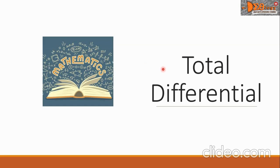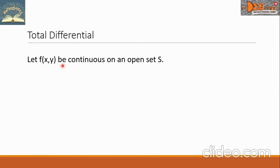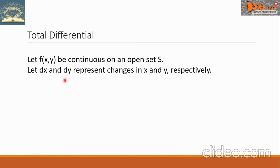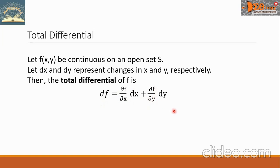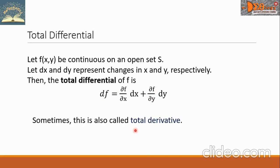Today we're going to study total differential. Let f of x, y be continuous on an open set S. Let dx and dy represent changes in x and y respectively. Then, the total differential of f is df, equals the partial derivative of f with respect to x multiplied by dx, plus the partial derivative of f with respect to y times dy. Sometimes this is also called the total derivative.